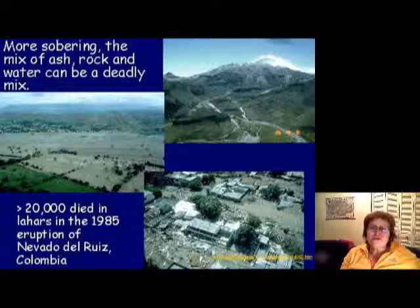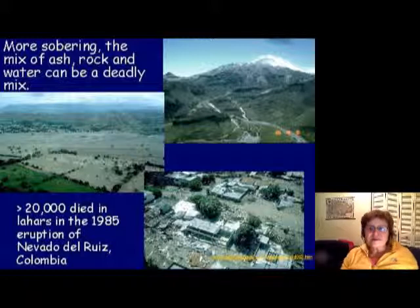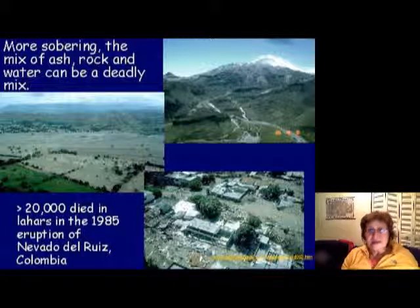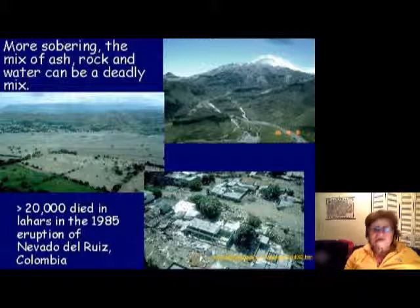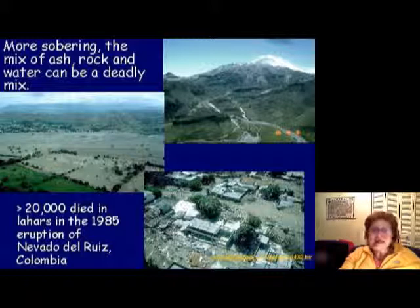This shows the famous lahar from Nevado del Ruiz in Colombia, which killed 23,000 people. The town was about 30 kilometers from the volcano — similar to the distance from Blacksburg here. It was in a valley, everything happened so fast, and it was 2 a.m. when the lahar came through and killed 20,000 people.